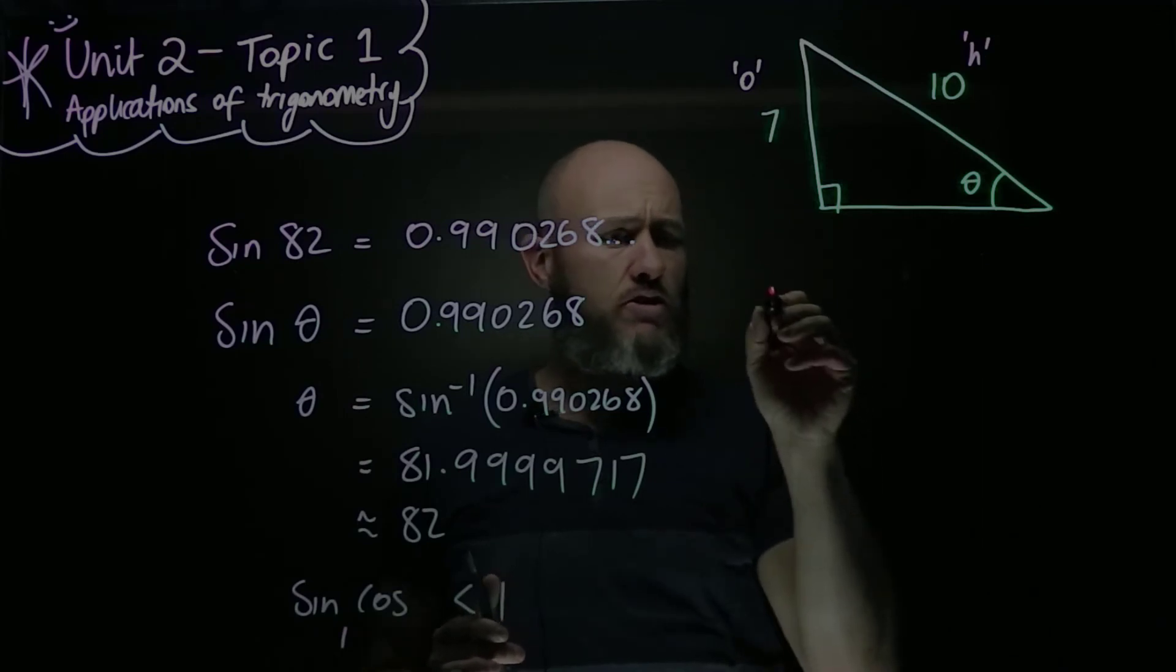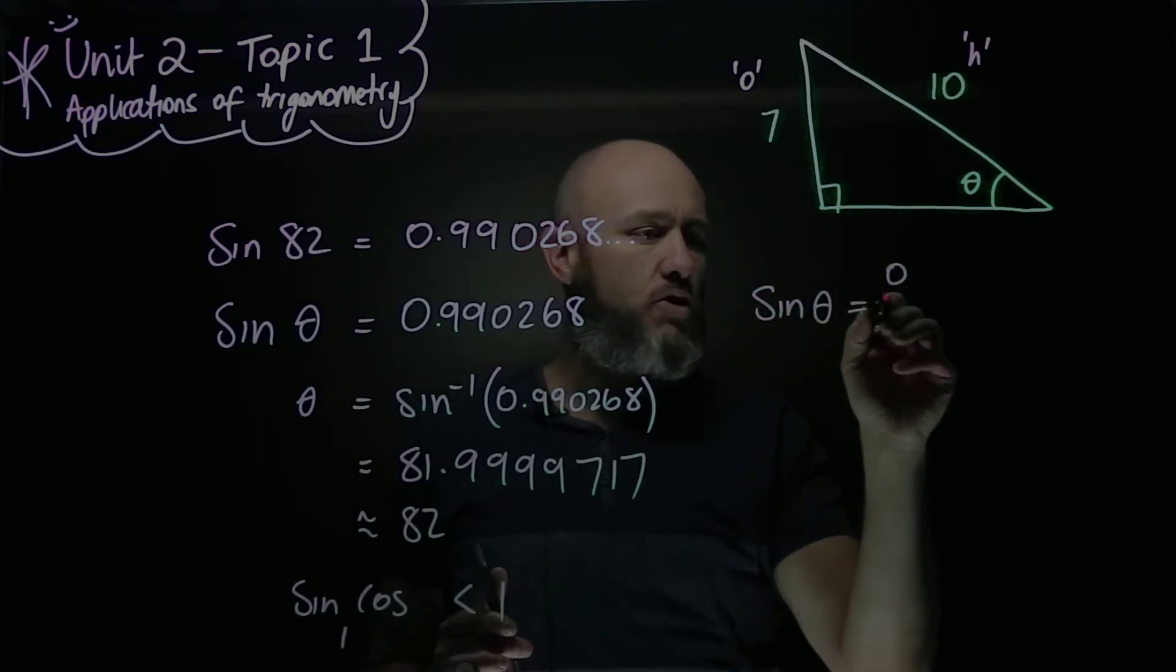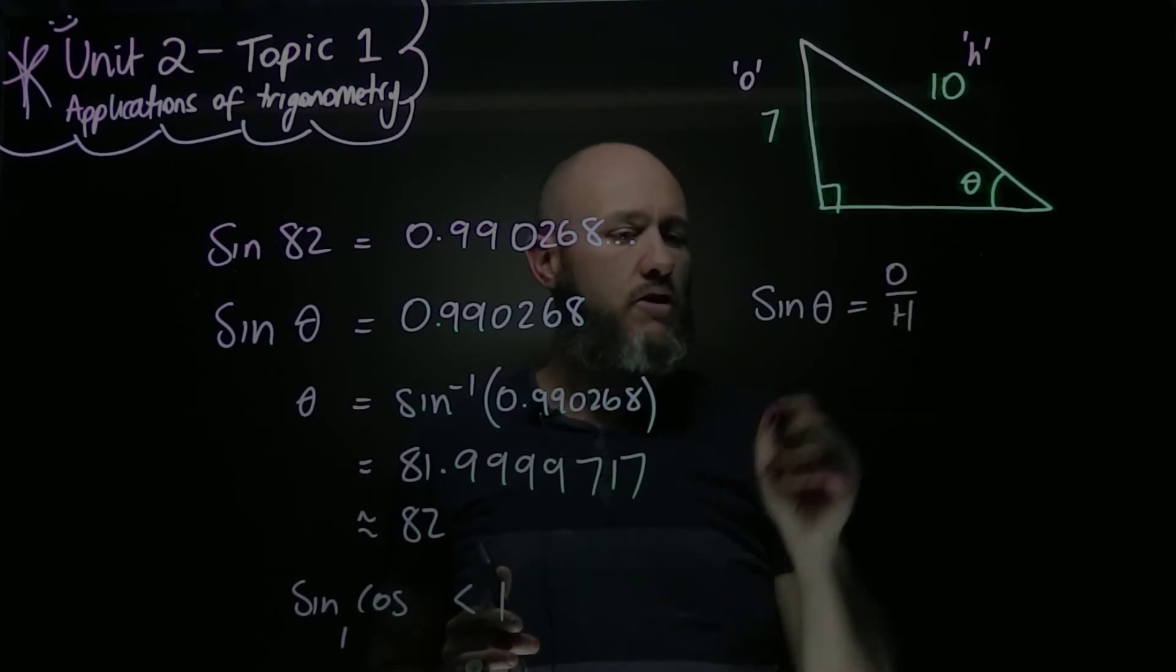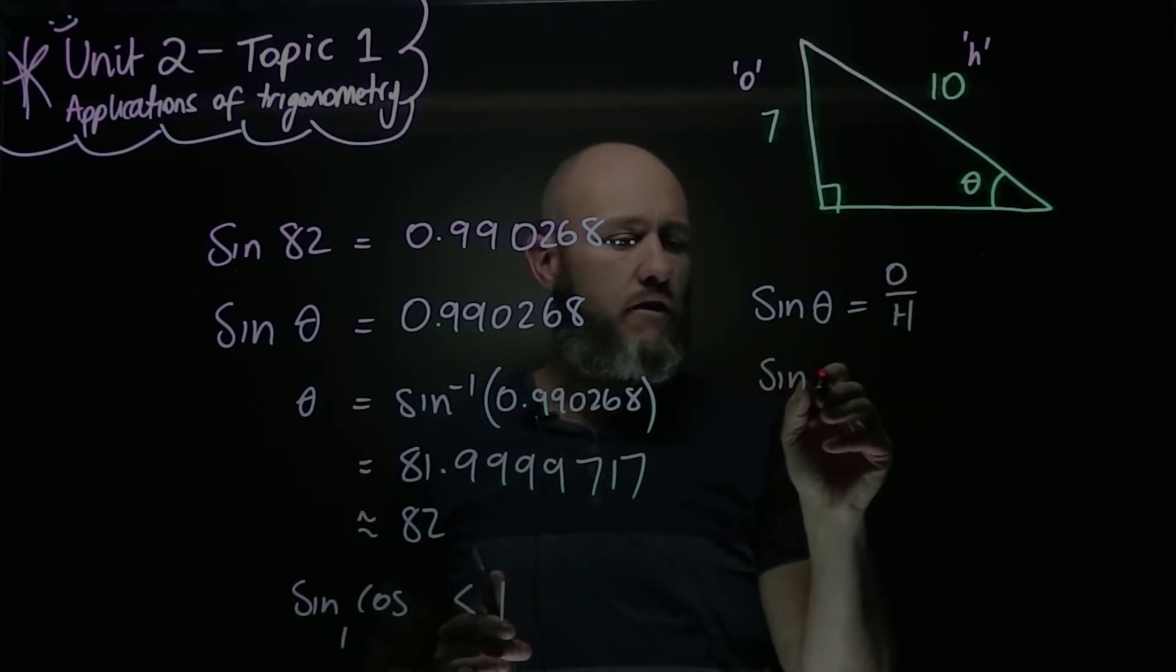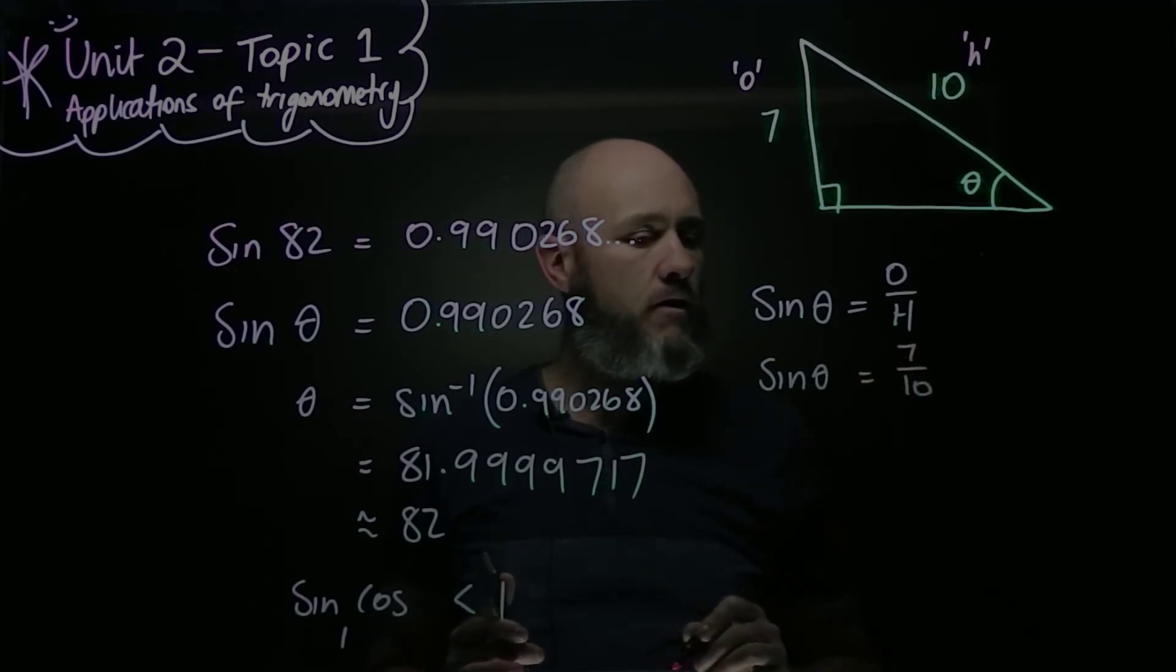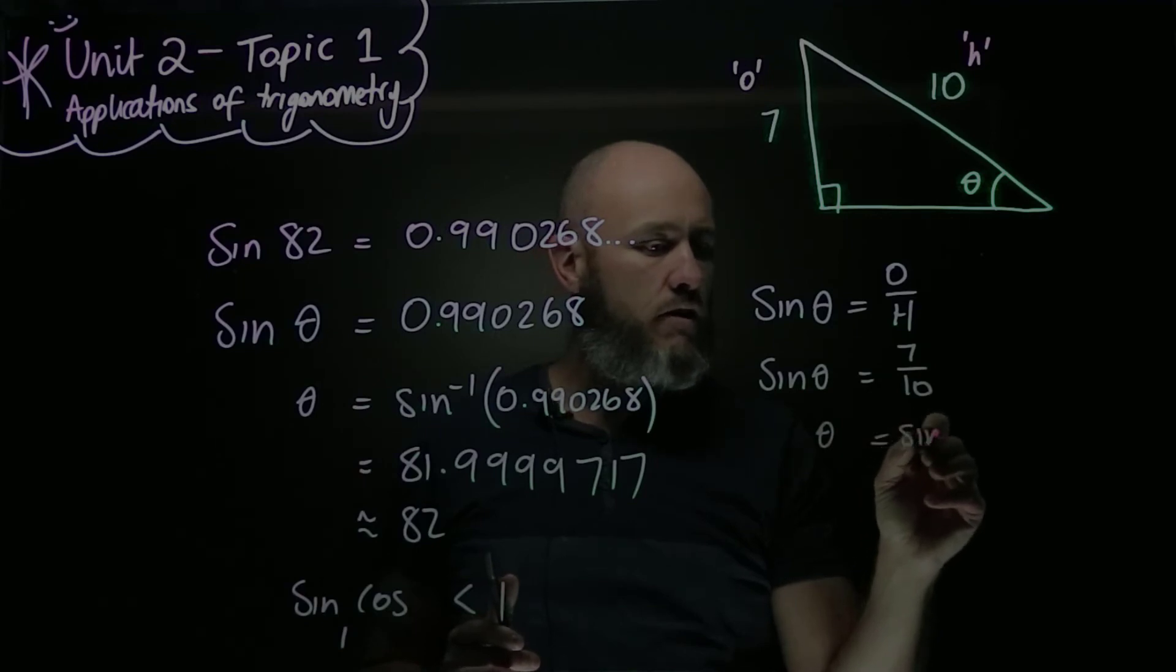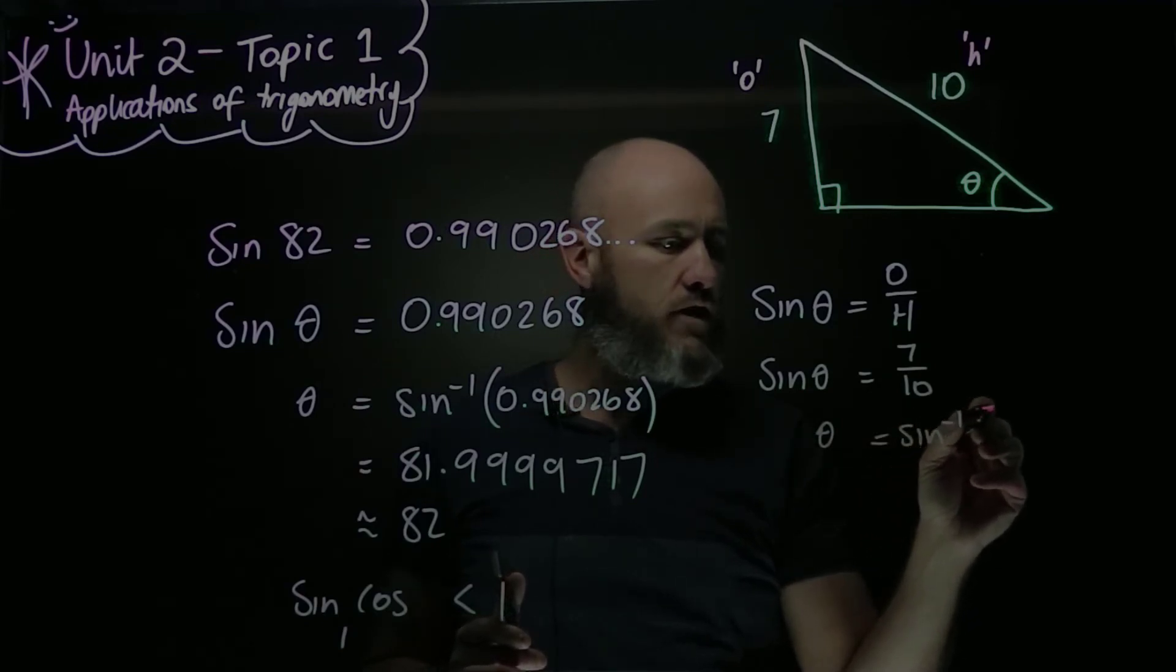So this is a sine question. And I've been a bit boring and stuck with sine twice now, but the other two work exactly the same way. So therefore, sine of theta, that's the angle I'm trying to find, is equal to 7 over 10. And therefore, theta is equal to sine inverse of 7 over 10, or 0.7.